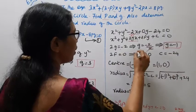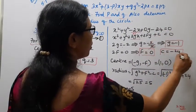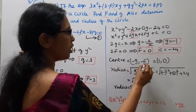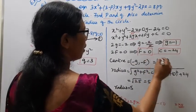2f is 0, so f = 0. And c = -24. The center is (-g, -f), where g = -1, so the center is (1, 0).